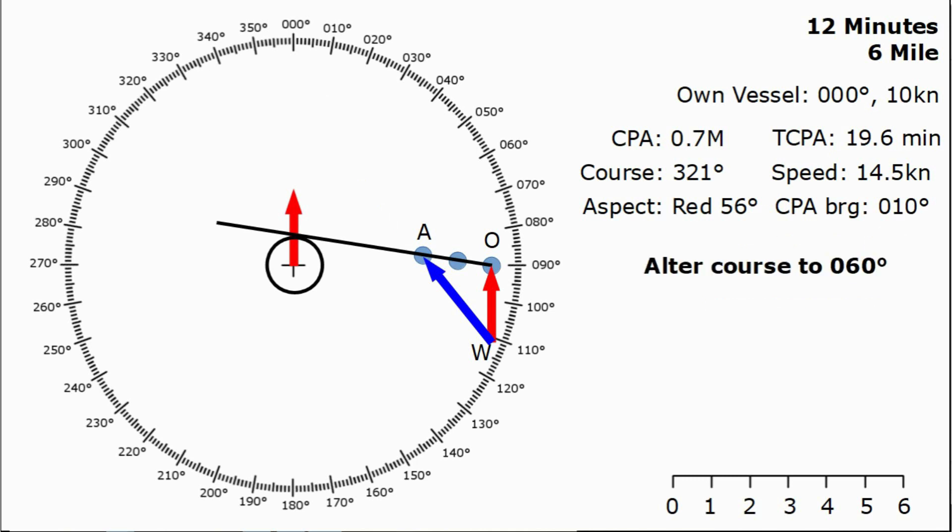I'm going to say that we want to alter course to 060. We're not happy with the CPA that we've got. It's only 0.7 miles and we know we need to alter to starboard. Because this is a crossing situation the other vessel is on our starboard side. We are the giveaway vessel. We need to make a bold alteration of course to starboard. I want to know what my CPA is going to be after I alter course to 060.